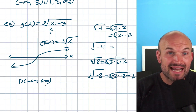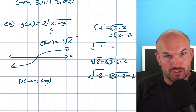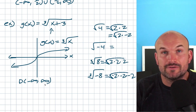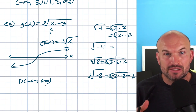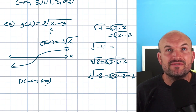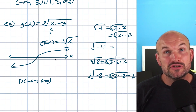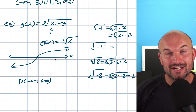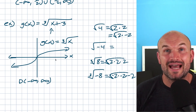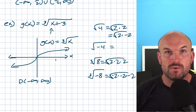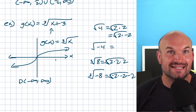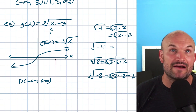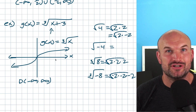Now that you have a handle on restrictions and identifying the domain with different functions, the next step is to find the range. If you're ready, check out the next video. Or if you want more examples of finding the implied domain, check out the examples linked below.